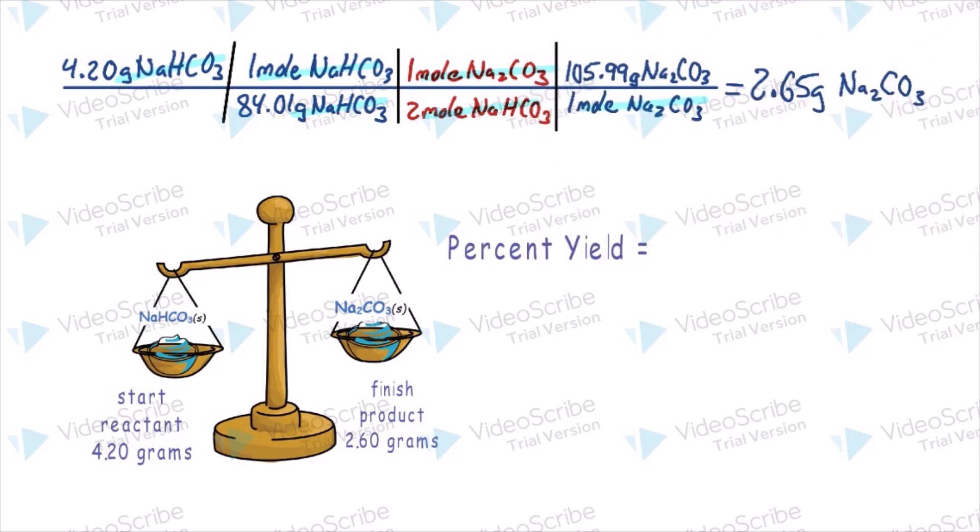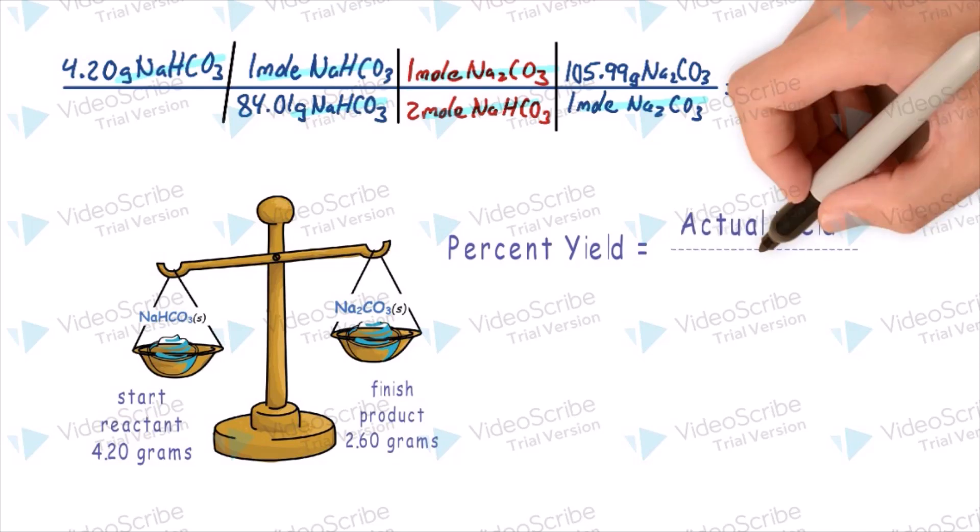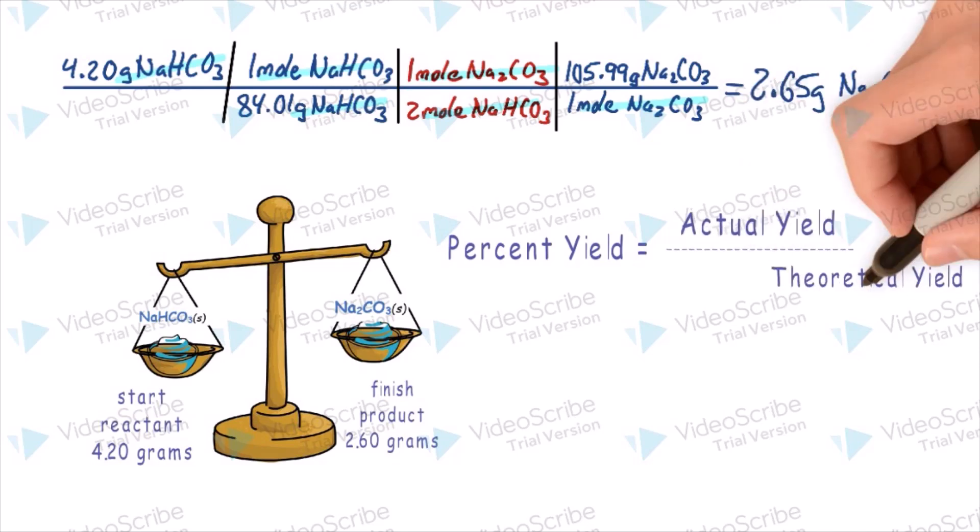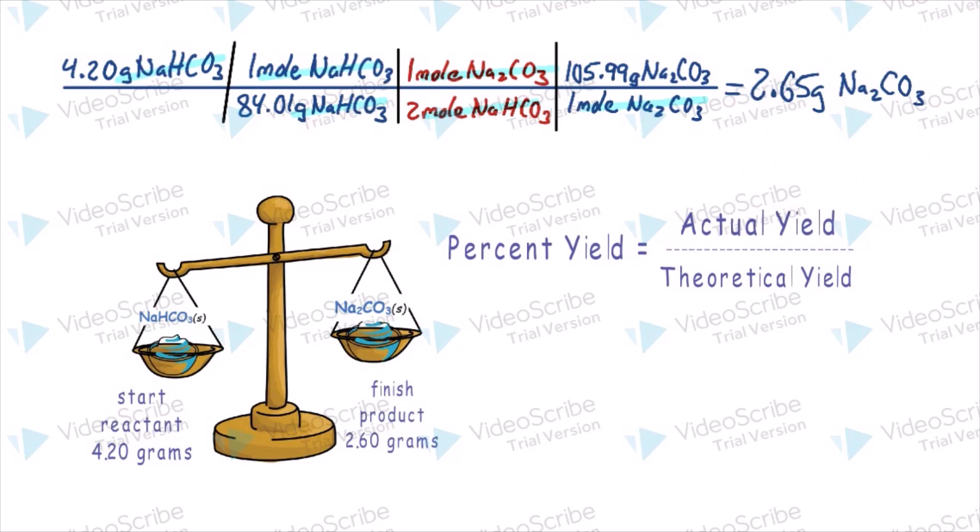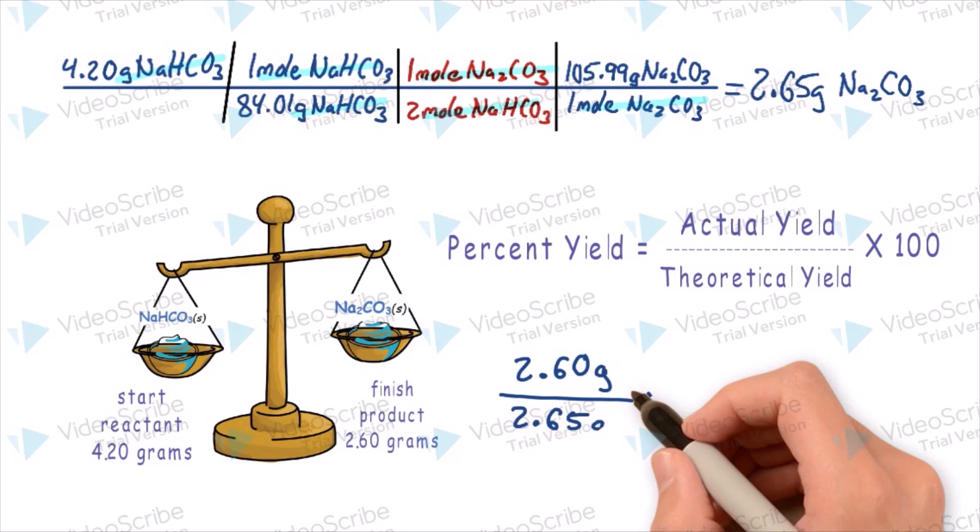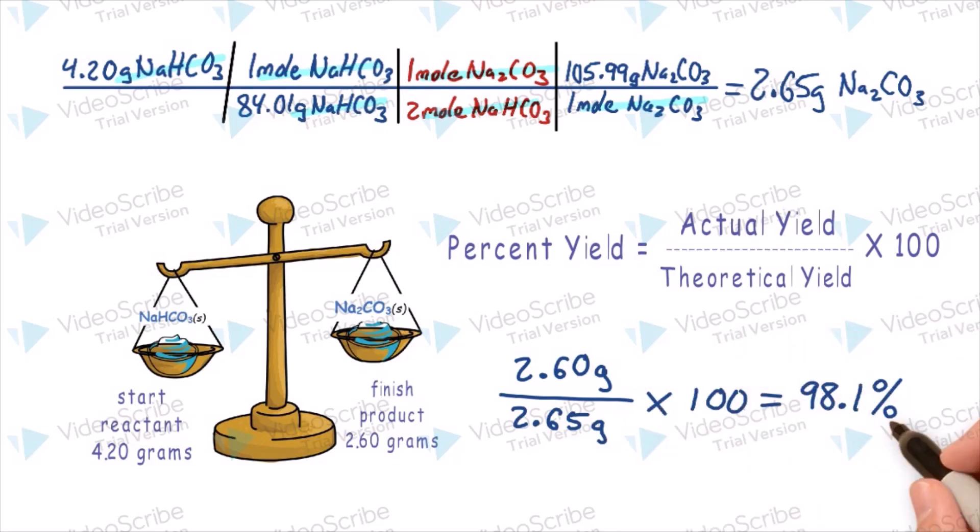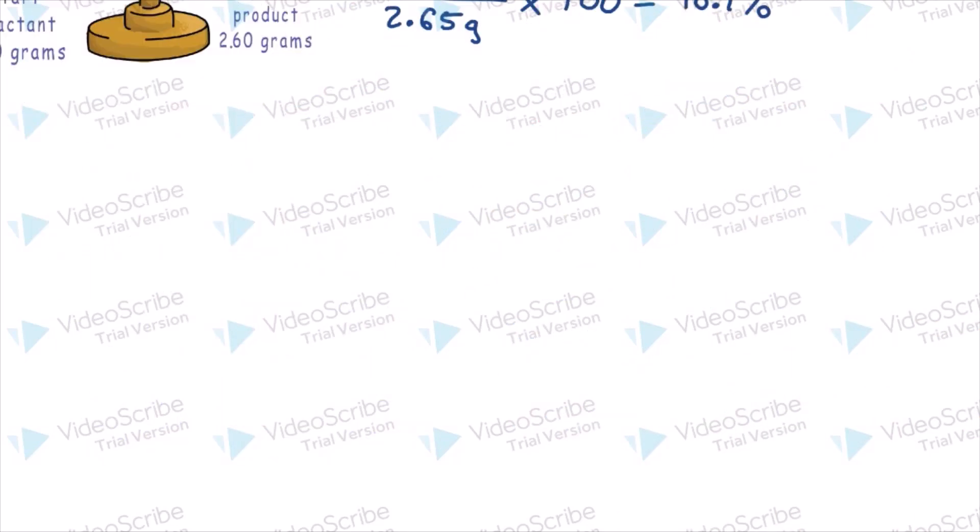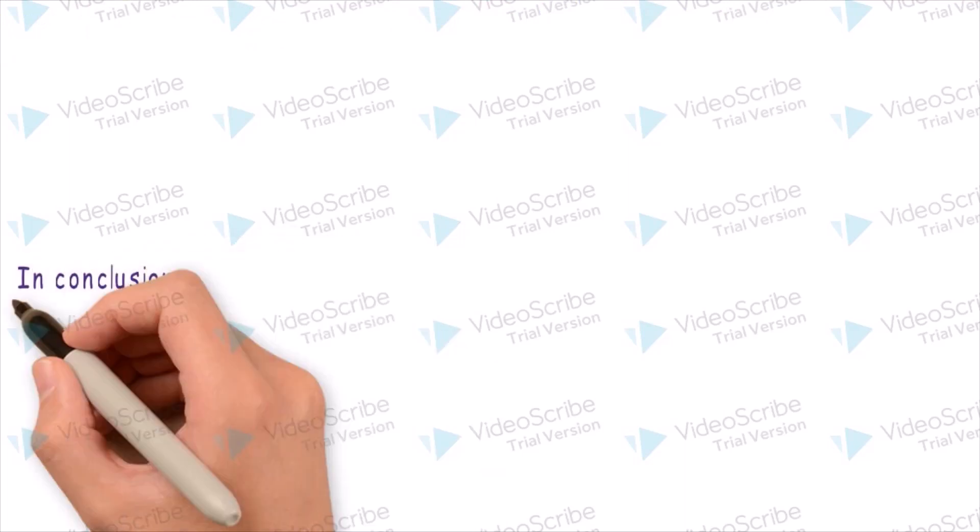We can calculate the percent yield, which is the actual yield divided by the theoretical yield times 100. The actual yield was 2.60 grams. The theoretical yield was 2.65 grams. We get a 98.1% yield.